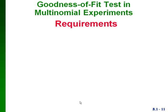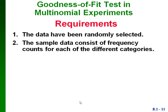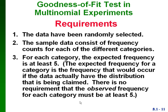Here are the requirements for a goodness of fit test. We have to have randomly selected data, and we have to have frequency counts for each of the different categories — not just percentages, but actual frequencies. And for each category the expected frequency has to be at least five. Note this is the expected frequency, not the observed frequency.